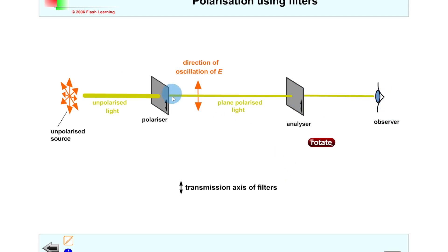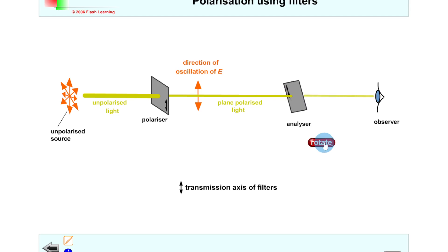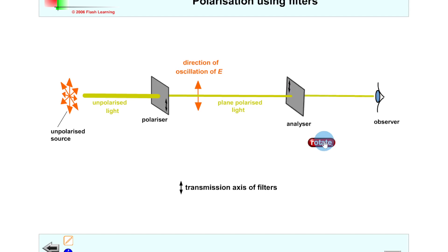Right now the polarizer and the analyzer are positioned to let light through in the vertical plane only. But if we rotate the analyzer, notice what happens to the brightness of the light: when it's at 90 degrees we get no light transmission, and then at another 90 degrees through we get maximum light transmission again.